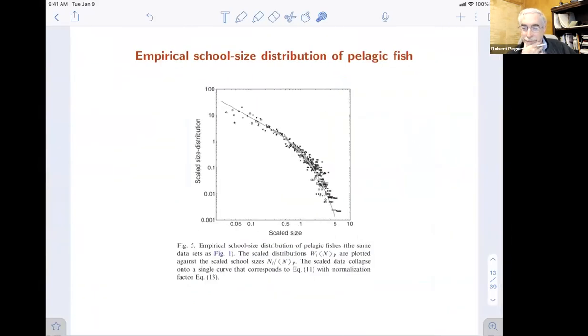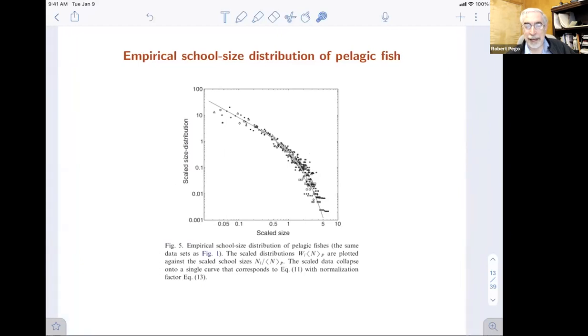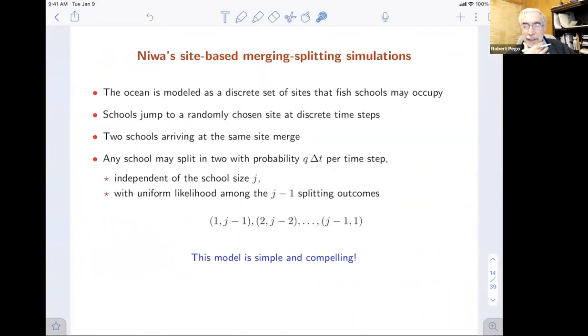Here's this data. It's over about two decades in scale size for fish schools. There's six different kinds of fish, all here. The scale size distribution on a log scale looks like this. There's quite a bit of scatter in biological data, but still, his prediction is right there on the black line. Here's the merging splitting simulations that he did.